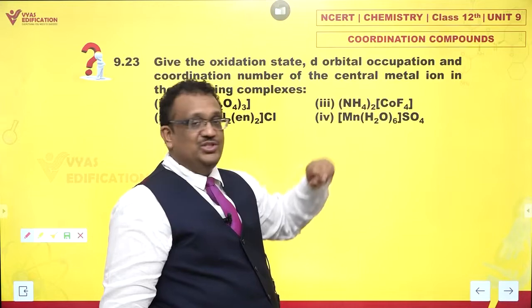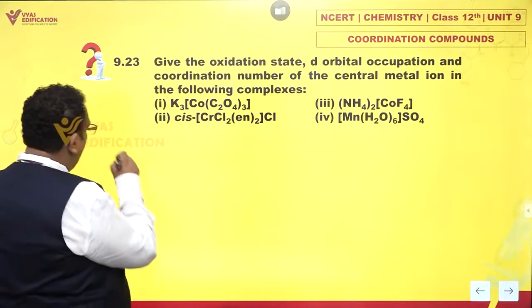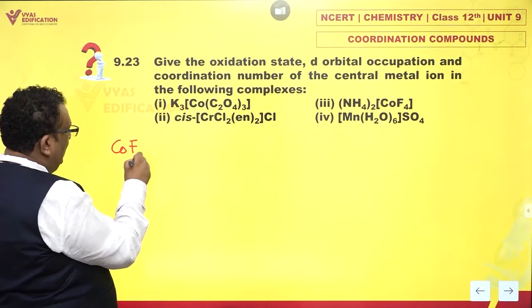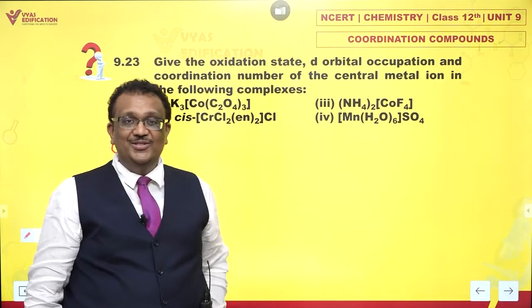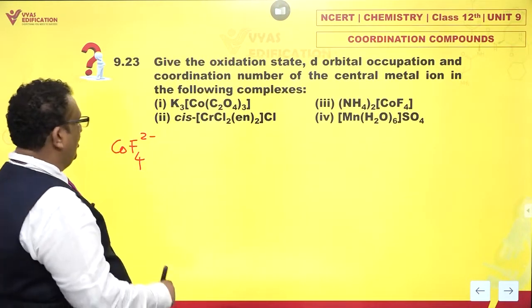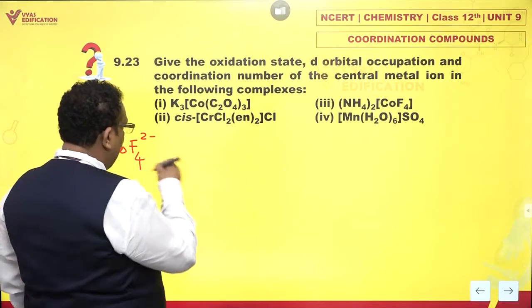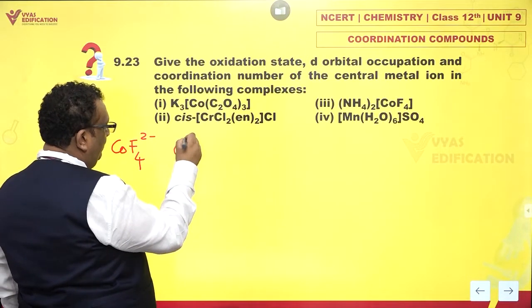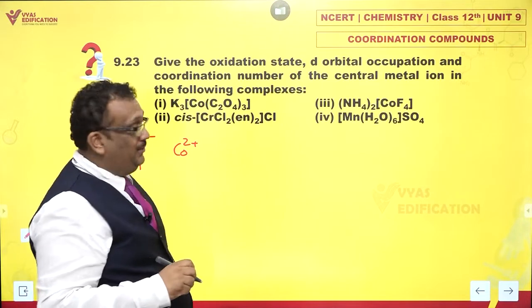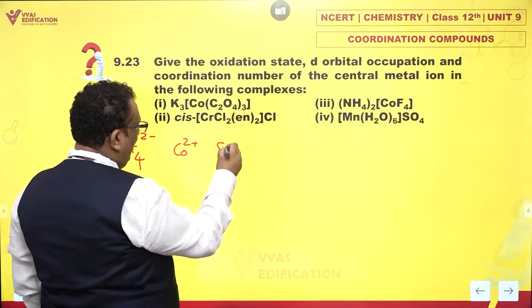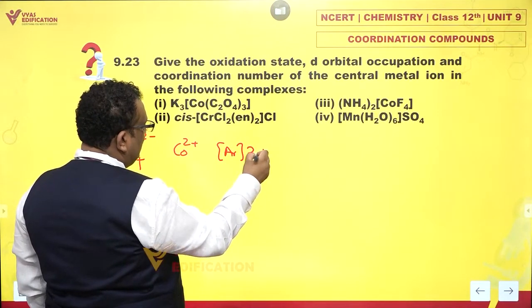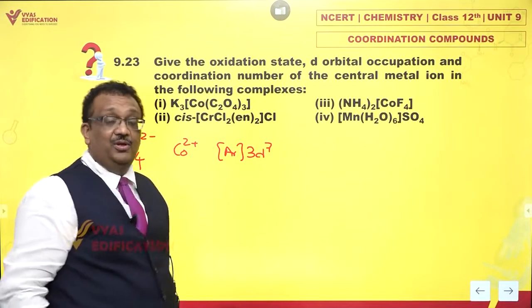And it's [Co(CoF4)]2-. If you look at the complex, it is CoF4 2-. Pretty strange. CoF4 2-. Now, fluoride ions are -1 charge carriers. So, cobalt would be +2. And cobalt +2 is very clearly a D7, argon 3D7. That is the electronic configuration.